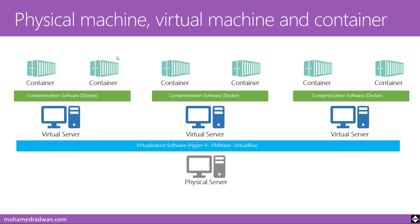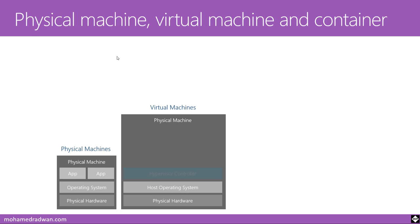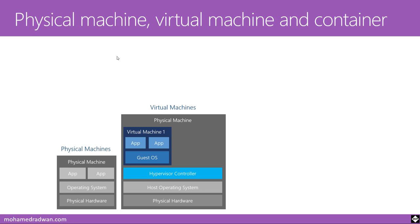Looking at the architecture: on a physical machine we have the physical hardware, the operating system, and applications installed on the OS. For a virtual machine, on top of the physical machine we have the hypervisor — the virtualization control software — and then we can have VM1 with a guest OS and applications installed on it, and VM2 with a different guest OS and different applications. Each virtual machine has its own operating system, so VM1 can be Windows and VM2 can be Linux.